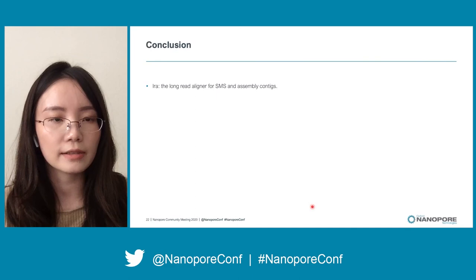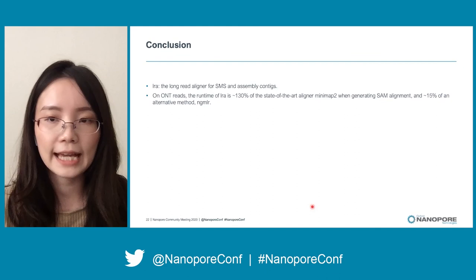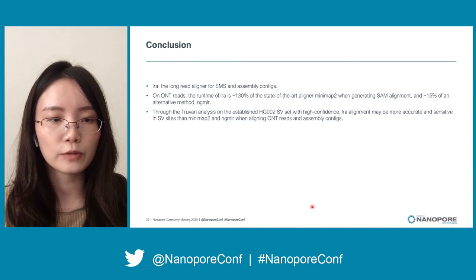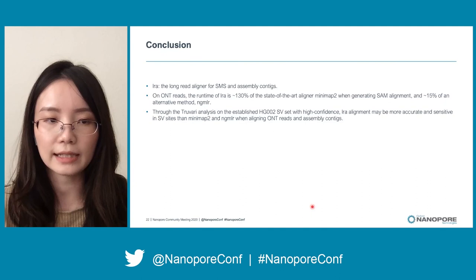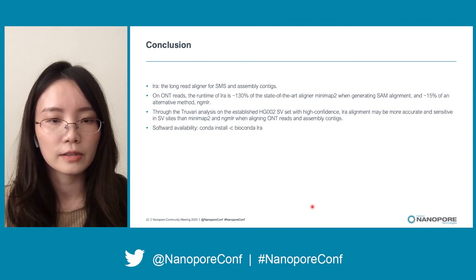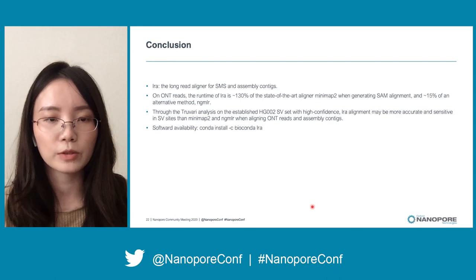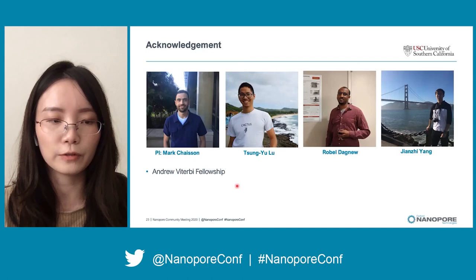Finally, the conclusion. Today I introduced LRA as a long-read aligner for long sequences and assembling context. On nanopore reads, the runtime of LRA is about 130% of the state-of-the-art aligner Minimap2 when generating SAM output, and about 15% of NGMLR. Through the Truvari analysis on the established HG002 SV set with high confidence, LRA alignment may be more accurate and sensitive at SV sites than Minimap2 and NGMLR when aligning nanopore reads and assembling context. LRA is available in Bioconda, so it's very easy to install and run the alignment commands — welcome to try it out. Finally, I want to thank my advisor Mark and my lab mates Song Yu, Ro Bell, and Jianzhi, and also the support of the Andrew Viterbi Fellowship.